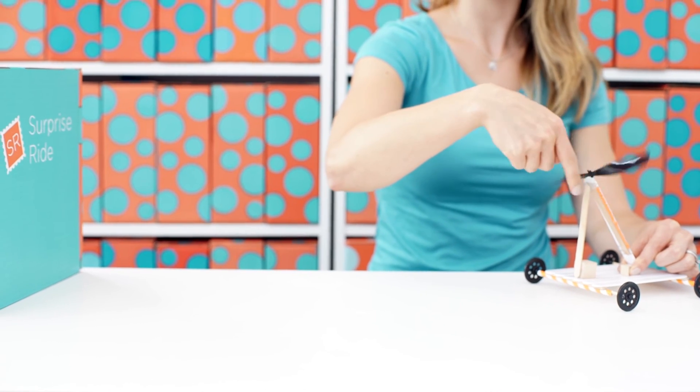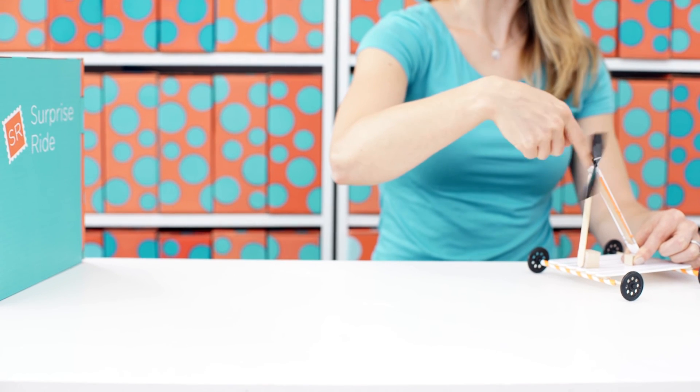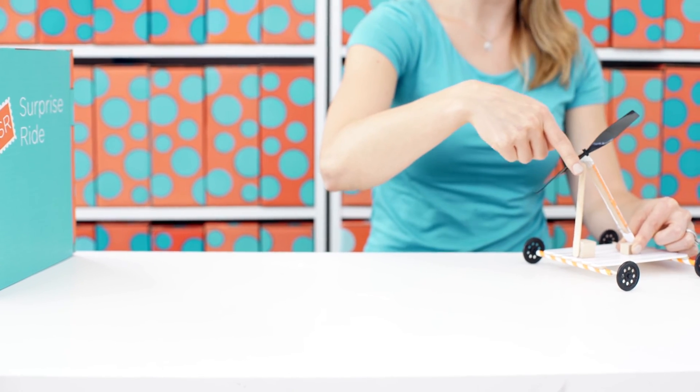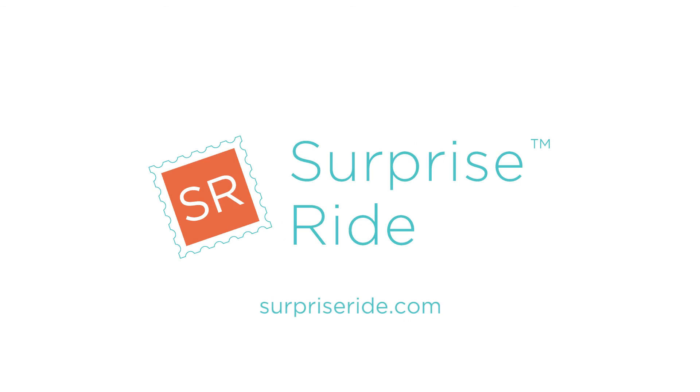Now let's test it out. Spin your propeller 30 times clockwise until you see the rubber band bunch on the side. Then let it go!